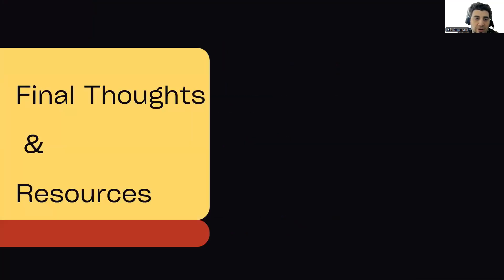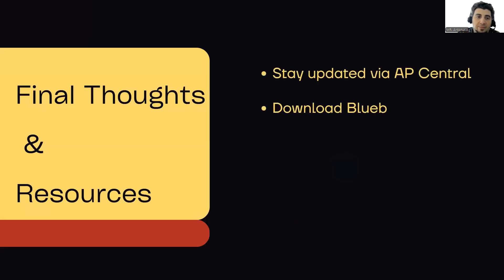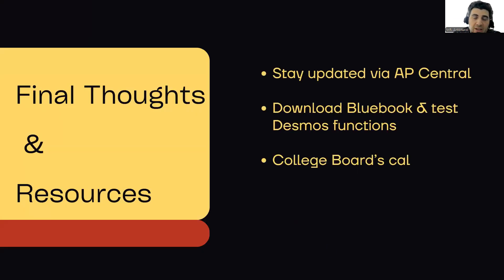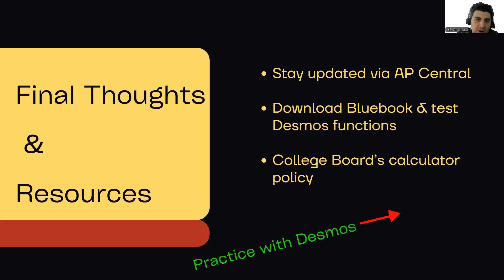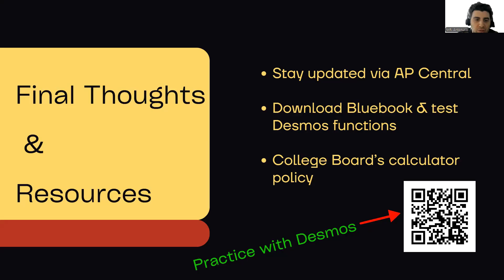A couple of final thoughts and resources: make sure you stay updated via AP Central with any further developments. Make sure you download Bluebook and test the Desmos functions in there. Make sure you're familiar with College Board's calculator policy. To practice with Desmos, here is a QR code that you can check out.